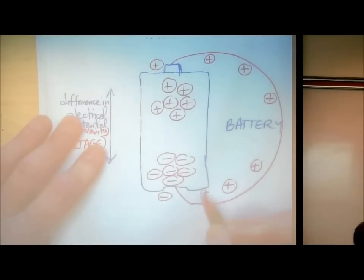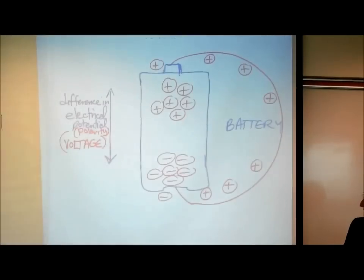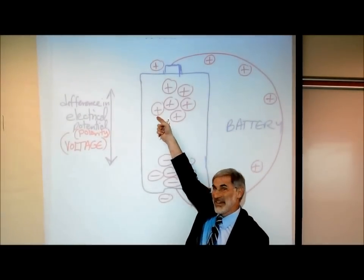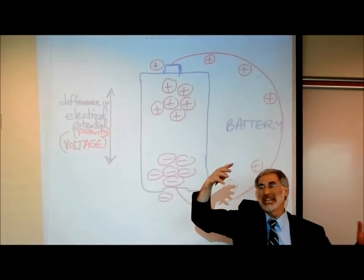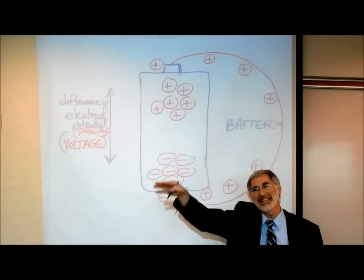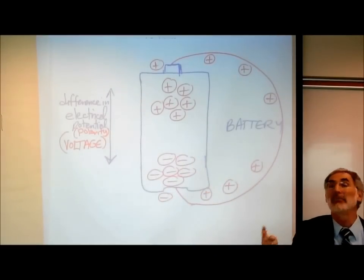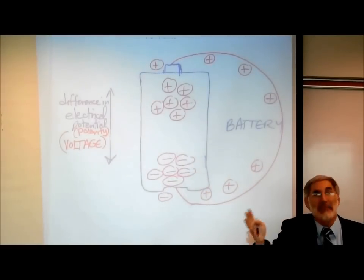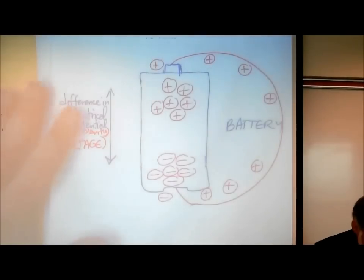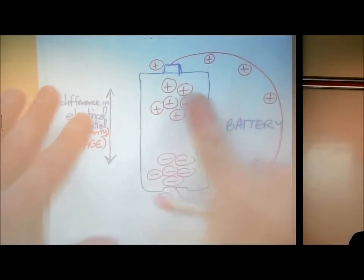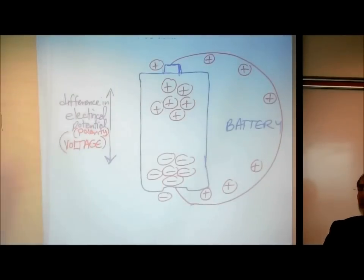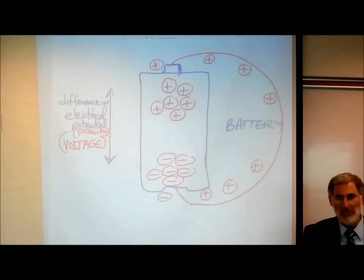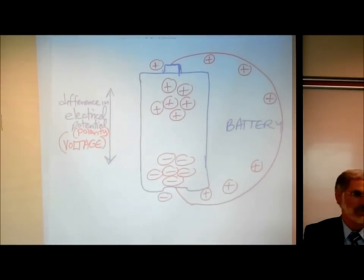Now in reality, we know that it's really the negative charged electrons that are moving towards the positive end. But when they set up the rules of electricity, they say positive moves to negative. It really doesn't matter what's moving — the point is something's moving. Electrical charges are moving, and this movement of electrical charges is called an electrical current.